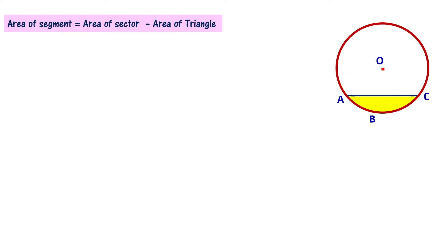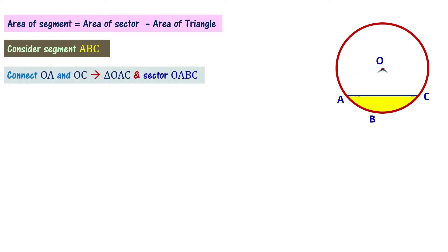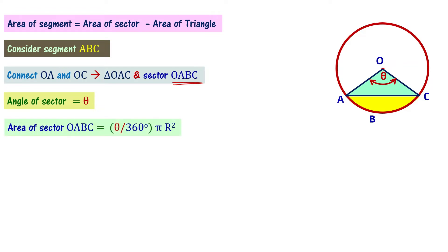Using this, let's now derive the formula. Consider segment ABC as shown in the figure. Connect OA and OC such that sector OABC is formed. Sector OABC subtends an angle theta at the center of the circle. The area of the sector equals theta divided by 360 degrees times pi r squared.